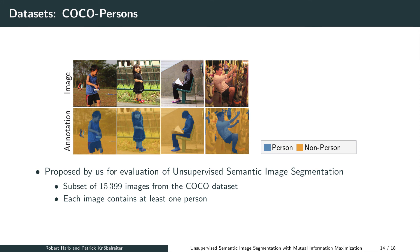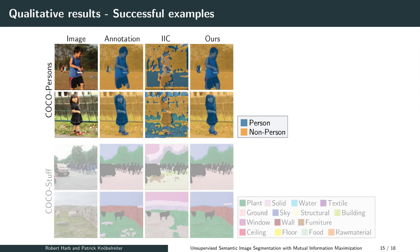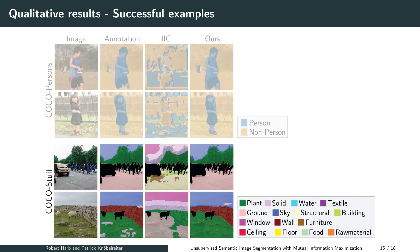The second dataset we use is COCO Persons, a subset of the COCO dataset proposed in this work. Each image contains one or multiple persons shown in various poses and environments. We present some successful segmentations made by our method. For both shown examples from COCO Persons, InfoSec was able to segment the depicted persons, whereas ISE failed to create a reasonable segmentation. Similarly, for the examples shown from COCO Stuff, our results are considerably better than ISE. The images also demonstrate how InfoSec can handle images containing multiple classes.